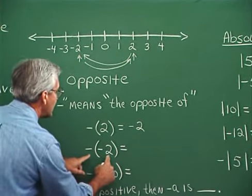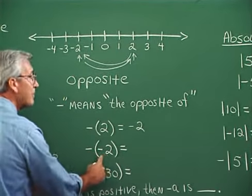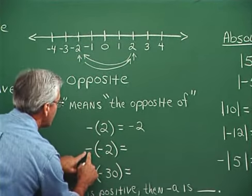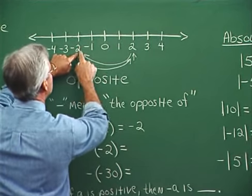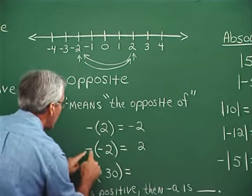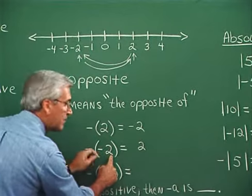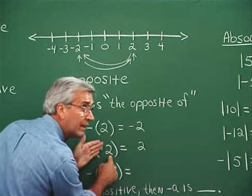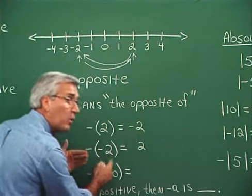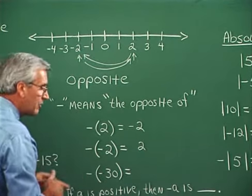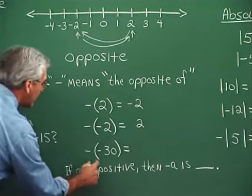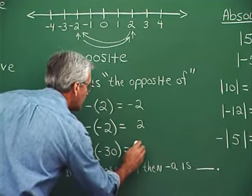This is the opposite of negative 2. Or, the opposite of the opposite of 2. Let's interpret it using the number line. The opposite of negative 2: here's negative 2, and the opposite would be 2. Reading it the other way: the opposite of the opposite of 2 — what's the opposite of 2? Negative 2. And the opposite of negative 2 is 2. So either way we look at it, we come out with 2. The opposite of negative 30 would be positive 30, or simply 30. When we don't write a sign in front of a number, it's understood to be positive.